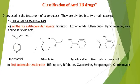Now we will see the classification of anti-TB drugs. The drugs used in the treatment of tuberculosis are termed anti-TB drugs. They are divided into two main classes: first, chemical classification based on chemical structure, and second, therapeutic classification. In chemical classification, we have two parts: synthetic anti-tubercular agents and anti-tubercular antibiotics.